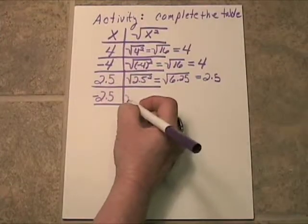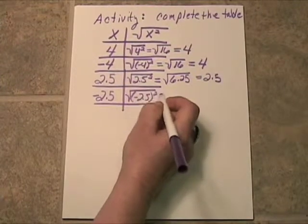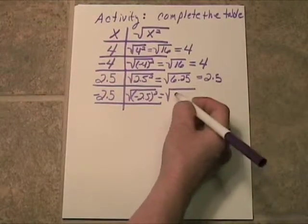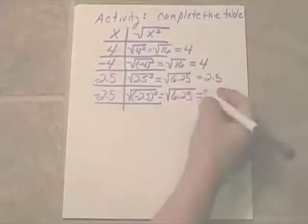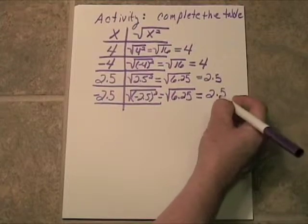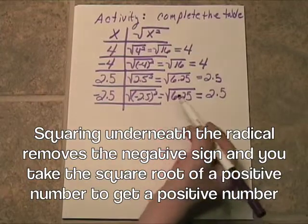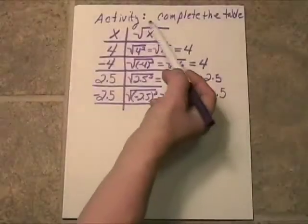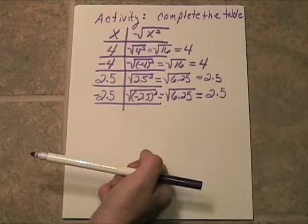The square root of negative 2.5 squared. Well, negative 2.5 times negative 2.5 once again is positive 6.25. And the square root of that is 2.5. So, squaring underneath the radical removes the negative sign, then you take the square root of a positive number and you get a positive number. So, over here, you're always going to get a positive number.